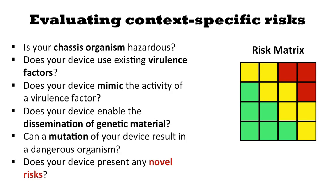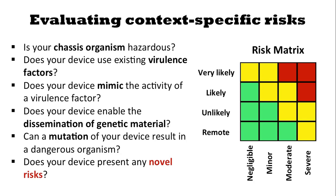When evaluating a particular risk, you may find it useful to use a risk matrix, as shown here. On one axis you have the consequence of an adverse event; on the other axis you have the likelihood of the adverse event. For example, a minor adverse event that is remote or unlikely — green — is possibly acceptable. On the other hand, a minor event that is likely or very likely is less acceptable — yellow — and you may want to go back to the drawing board to mitigate this risk. A severe adverse event that is likely or very likely is red, completely unacceptable. And a severe event that is unlikely or remote is still yellow. This is not the only way to think about risk, but you may find it useful.